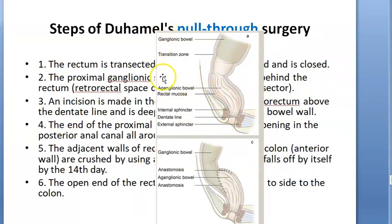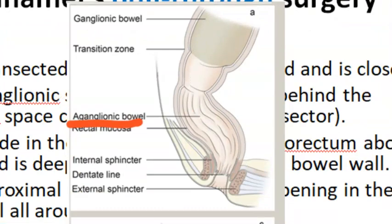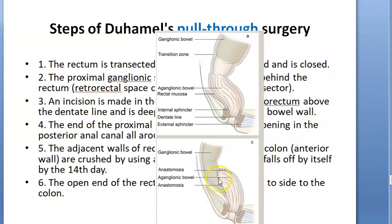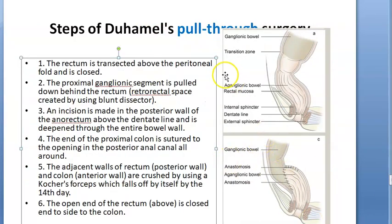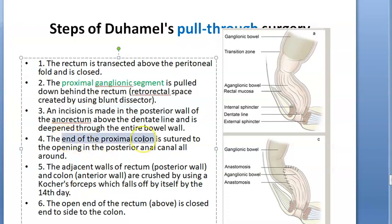The Duhamel pull-through procedure works slightly differently: the aganglionic segment is not fully removed. Instead, the rectum is transected above the peritoneal fold and closed. The proximal ganglionic segment — the good part with functioning nerves — is pulled down behind the rectum, and an incision is made in the posterior wall of the anorectum above the dentate line. The proximal colon is sutured to the opening in the posterior anal canal.